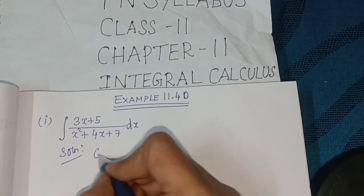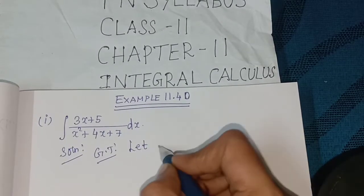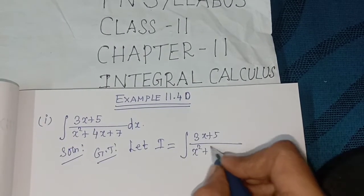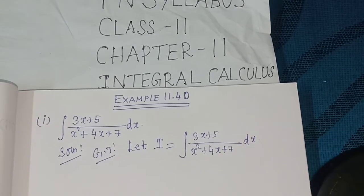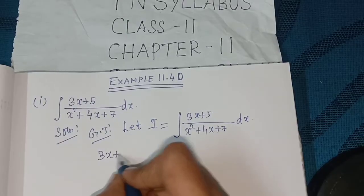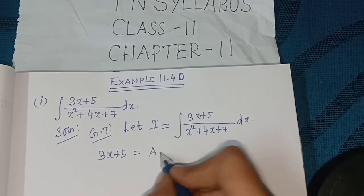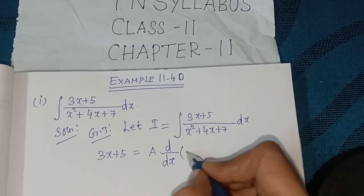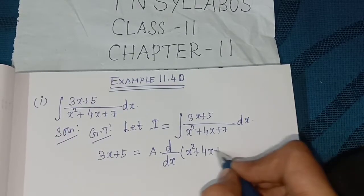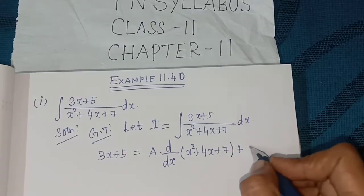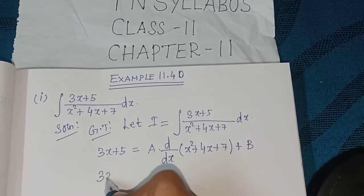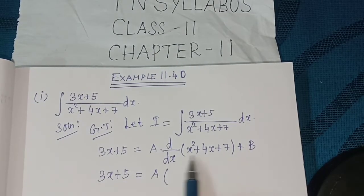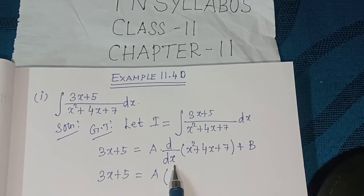Solution. Given that, let I equal to integral of (3x + 5) divided by (x² + 4x + 7) dx. So, 3x + 5 equal to A into d/dx of (x² + 4x + 7) plus B. 3x + 5 equal to A into d/dx of (x² + 4x + 7).